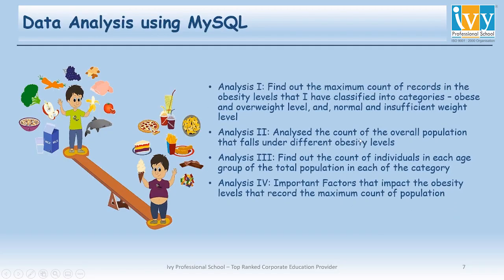Now coming to the data analysis part. I will perform data analysis using MySQL queries in four parts: first, the maximum count of records in the obese/overweight versus normal/insufficient weight categories; second, count of records in each obesity and overweight level; third, count of individuals in each obesity level based on the eight age group intervals; and fourth, the impact of the important attributes on obesity and overweight levels.